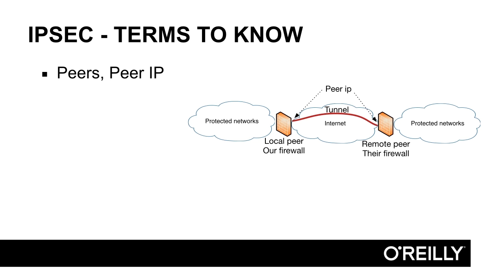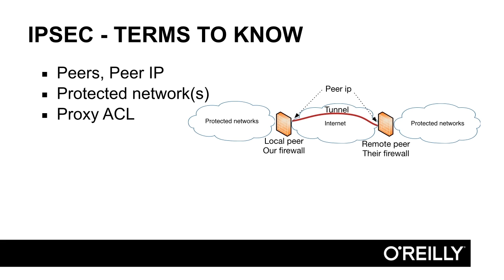Peer A needs to know the peer IP of Peer B and vice versa, and those IP addresses are used to send and receive the encrypted traffic. The protected networks are the inside networks that are using the VPN tunnel. Traffic goes from one protected network to another protected network over the VPN tunnel. In an IPsec VPN, the traffic is routed in the firewalls so that the protected networks on each side are on different IP subnets. In order for the peers to route and encrypt the VPN traffic, they need to know which traffic to encrypt, and that is done with a proxy ACL — an access list in each peer that contains the definition of which local and remote protected networks should be encrypted.